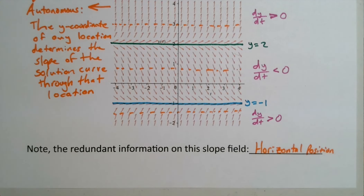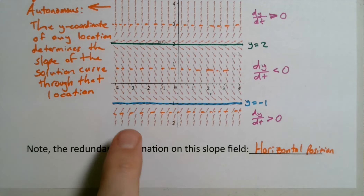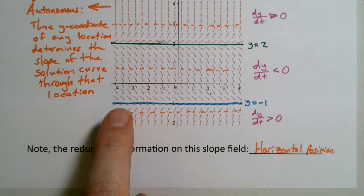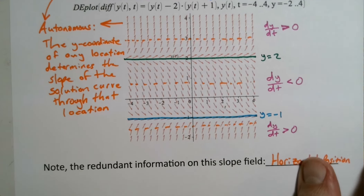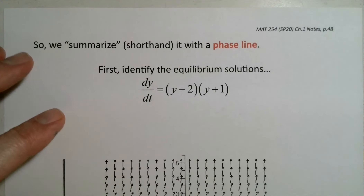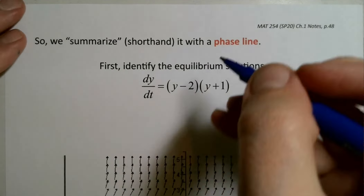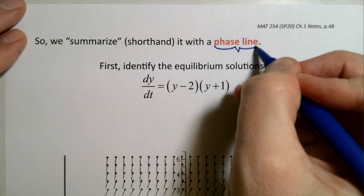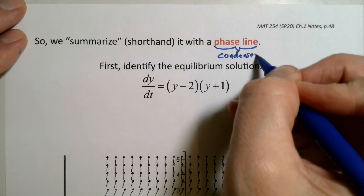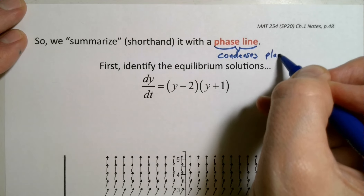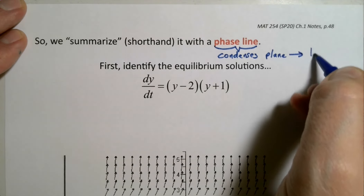In other words, it doesn't matter where you are horizontally — it's completely up to what the y coordinate is. So what we're going to do next is use this information to create what's called a phase line. A phase line is a way of condensing all the information of the plane onto one line.